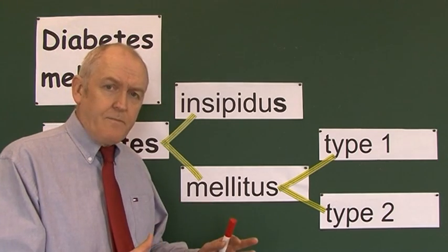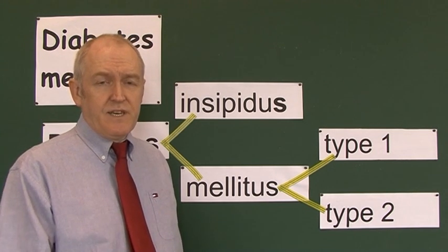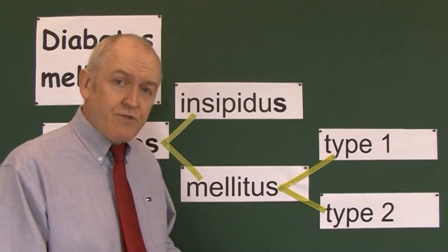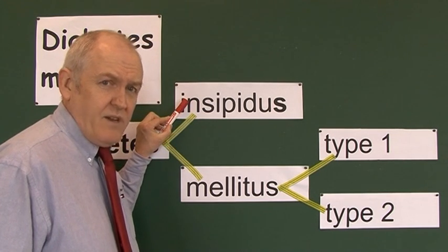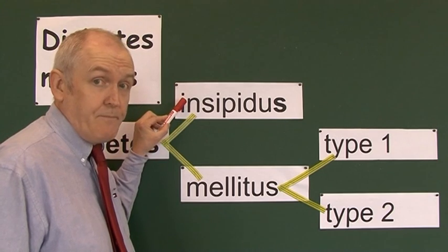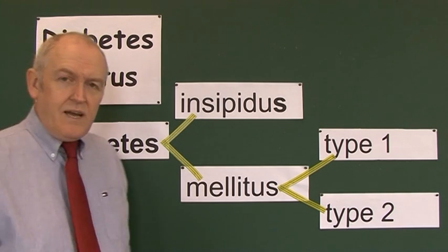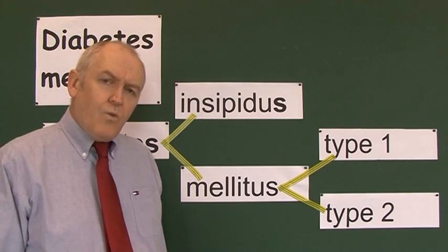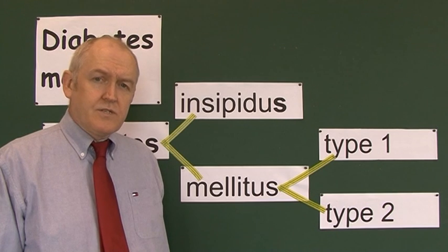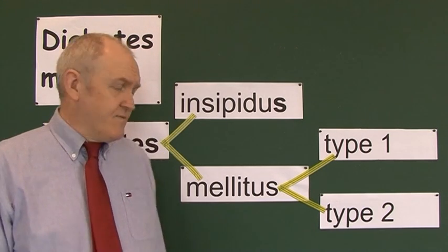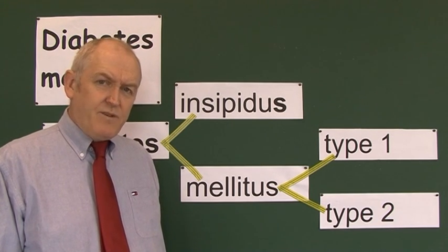In clinical practice, if a patient starts producing large volumes of urine, the key question is whether it's sweet or not. If there's no sugar, it could be the insipidus form, but that is pretty rare — you're unlikely to come across it very often in your career. Diabetes mellitus, however, is not rare by any means. In whatever clinical field you work in, you're almost guaranteed to encounter it. In the UK it's currently at least 4% of the population.